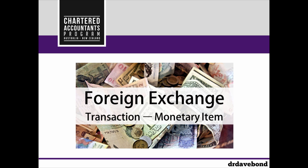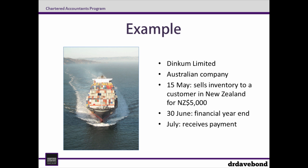Hi, my name is Dave and in this video we'll walk through an example of a foreign currency transaction focusing on a monetary item. In this example, Dinkum Limited is an Australian company and on the 15th of May sells inventory to a customer in New Zealand for 5,000 New Zealand dollars. Note we're assuming that Dinkum uses Australian dollars for their accounting. Dinkum has a 30 June year-end and the customer pays for the inventory sometime in July.